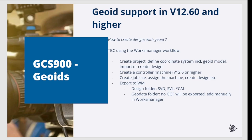You can also use the TBC to Works Manager workflow. The steps are: create a project, define a coordinate system which includes a GeoEat model, import or create a design, create a controller of version 12.6 or higher, then create a job site, assign the machine, and create a design. Then export everything to Works Manager. This will export the SVD, SVL, and CAL file into a design. However, no GGF file — meaning the GeoEat grid file — will be exported to Works Manager. The GeoEat file must be added manually in the Works Manager settings.